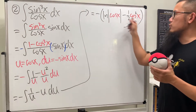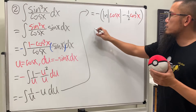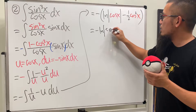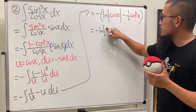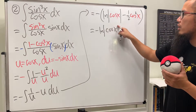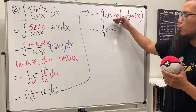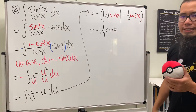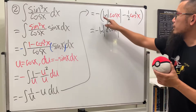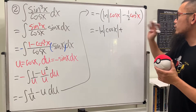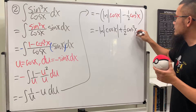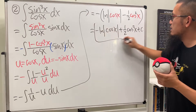Distributing the negative gives us negative ln absolute value of cosine x — if you'd like, you can bring the negative inside and turn that into secant. Lastly, negative times negative gives positive one half cosine squared x, plus c. That's the answer for number two.